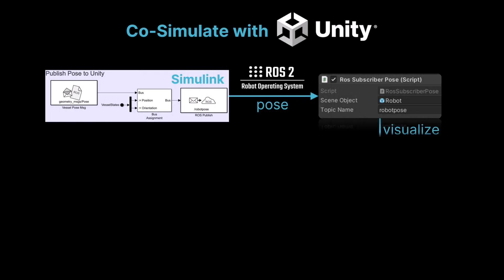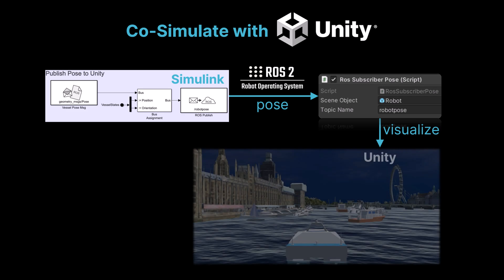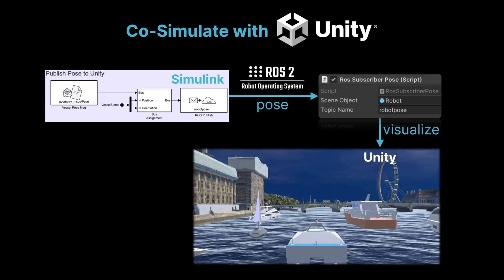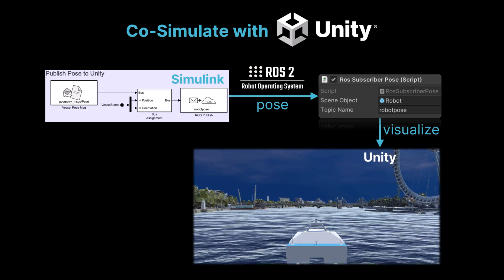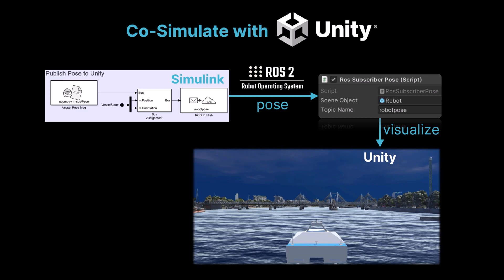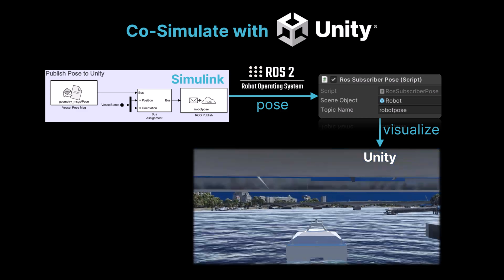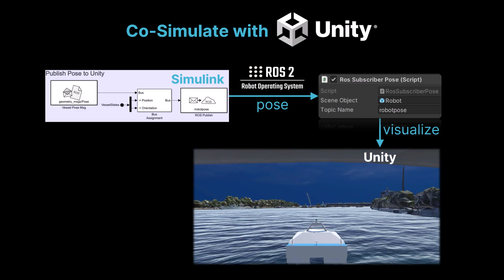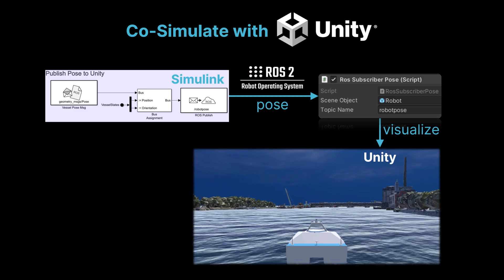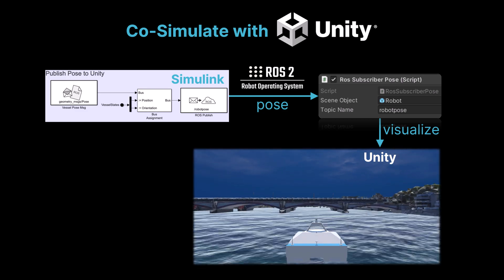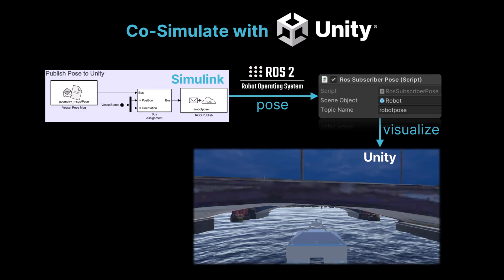Additionally, if your scenes are created in Unity, we can co-simulate Simulink in Unity using ROS, Robot Operating System. This example demonstrates how the integration works. To learn more about ROS in MATLAB and Simulink, I recommend checking out my ROS2 tutorial on my channel.